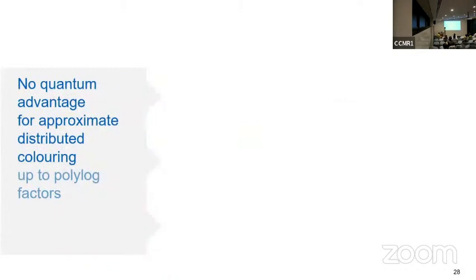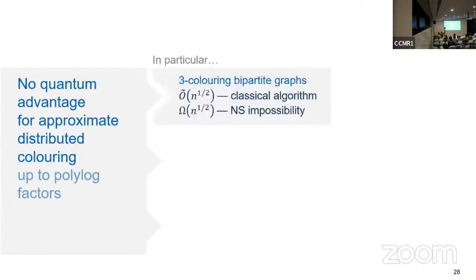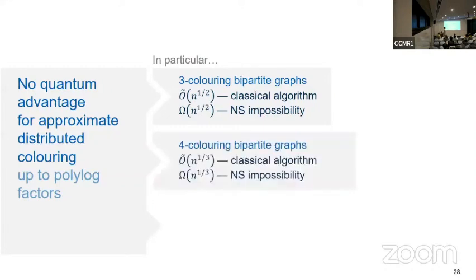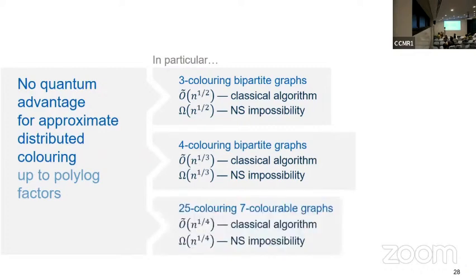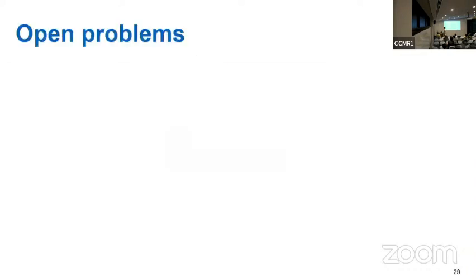We have characterized fully the hardness of approximate distributed coloring in general graphs. So in particular, if you want to three-color bipartite graphs, the complexity is roughly up to polylog factors theta of square root of n. If you want to four-color bipartite graphs, the complexity is up to polylog factor theta of cubic root of n. And if we want to 25-color seven-color graphs, it's n to the 1 over 4.